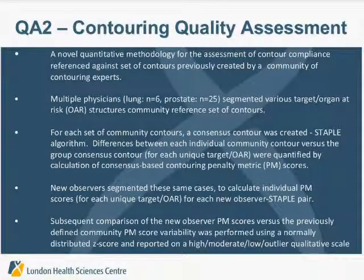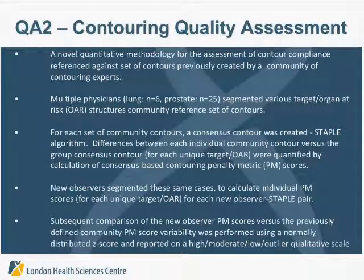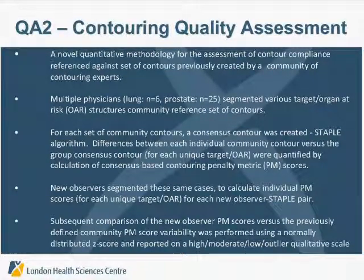The first project was really about teaching interventions, but the second project, in extension to that, looked at the issue of contouring quality. When we have a contour, it's hard to actually say whether or not that's a good contour. There's no real system in the literature to say that's a good contour, or that's an outlier contour.